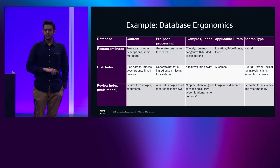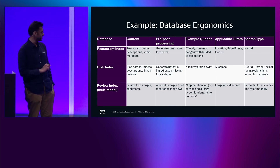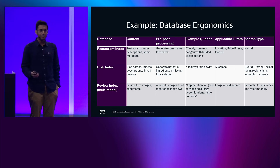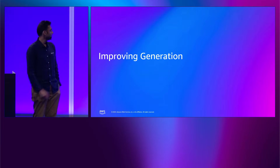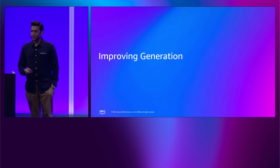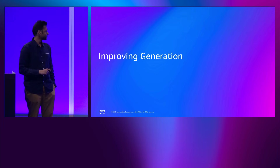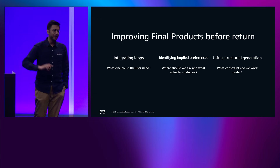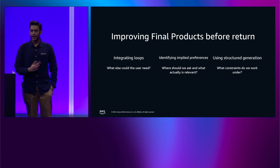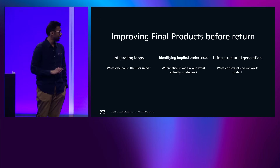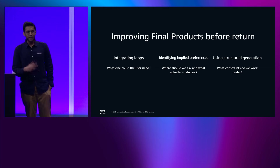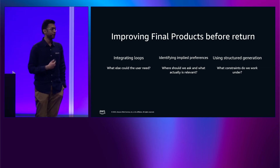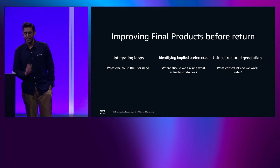Finally, we have the review index, which is also inherently multimodal — people type descriptions and post images of food. We might need to implement image-to-image search or image-to-text search, and we need to think about how to instrument this for our agent. We also need to think about how to improve the underlying generation. In vanilla RAG, people shoot a query to a database and return LLM-generated results directly to the user, but there's a lot of opportunity lost where we could spend more time understanding whether results are relevant to that specific user in that specific context.